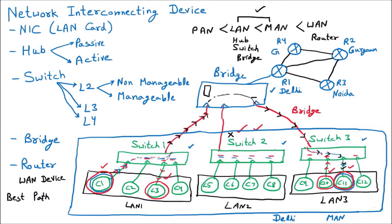Similarly, in Gurgaon, Router 2 will have a bridge connected to switches, and those switches will be connected to computers in the same fashion. All other cities will have their own network — bridges and further switches — for Noida and Ghaziabad as well. When we talk about the router, we are talking about the whole network.